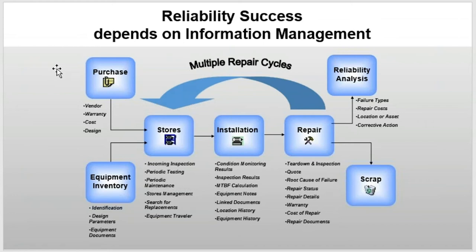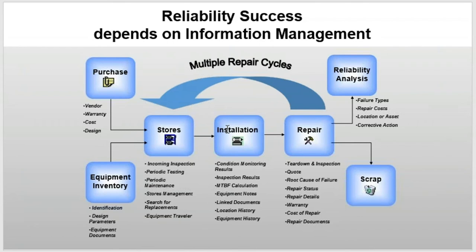There's a cycle of information being generated from many different sources, from the point an asset is purchased — either as a new capital expansion item, a repair item, or replacement item — to when it goes into equipment inventory. It may go into service quickly or into storage, going through certain maintenance and care steps, before ending up installed on a base plate — motors, pumps, gearboxes, blowers.